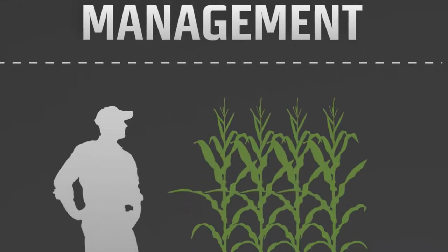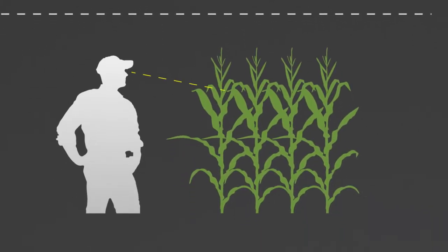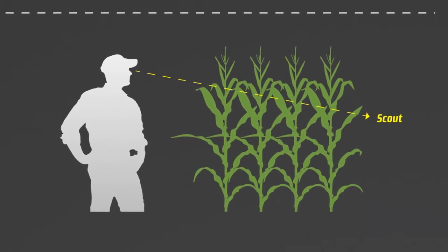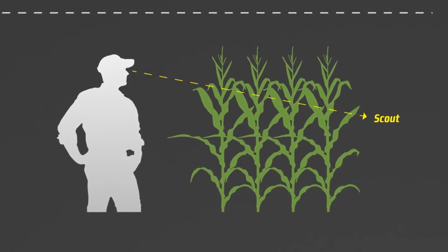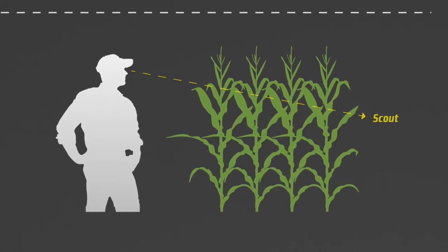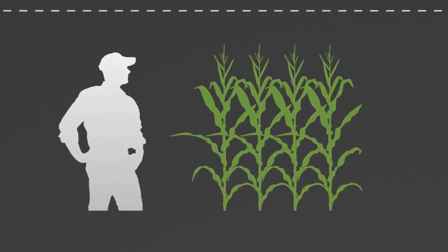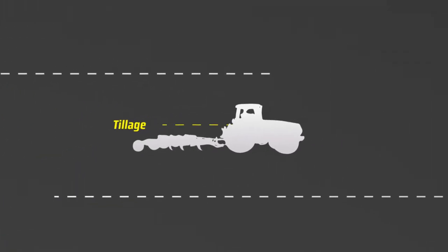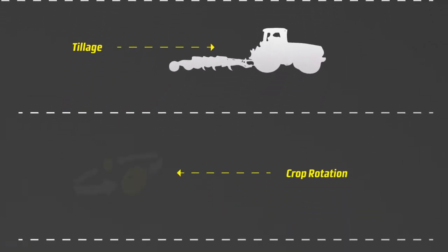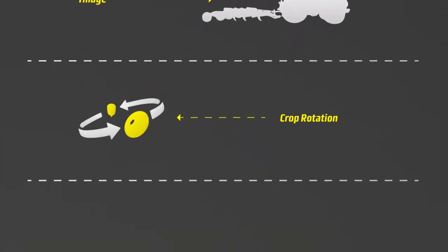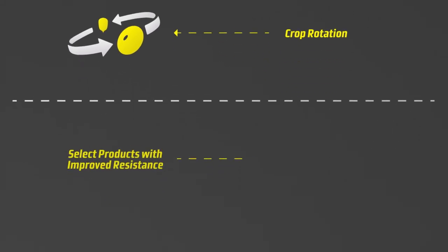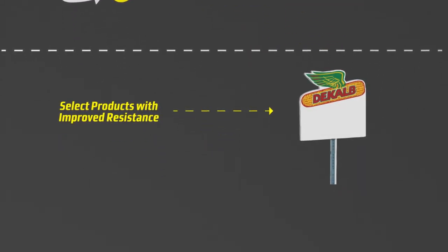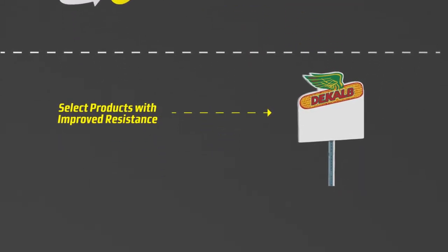An effective ASR management plan incorporates a variety of best practices, like scouting your fields after planting — especially between grain fill and harvest — to determine disease presence and severity, and to aid in prioritizing infested fields for early harvest. Tilling to bury infected residue, rotating corn with soybeans or cotton, and selecting disease-resistant products from DeKalb can also help to curb your ASR.